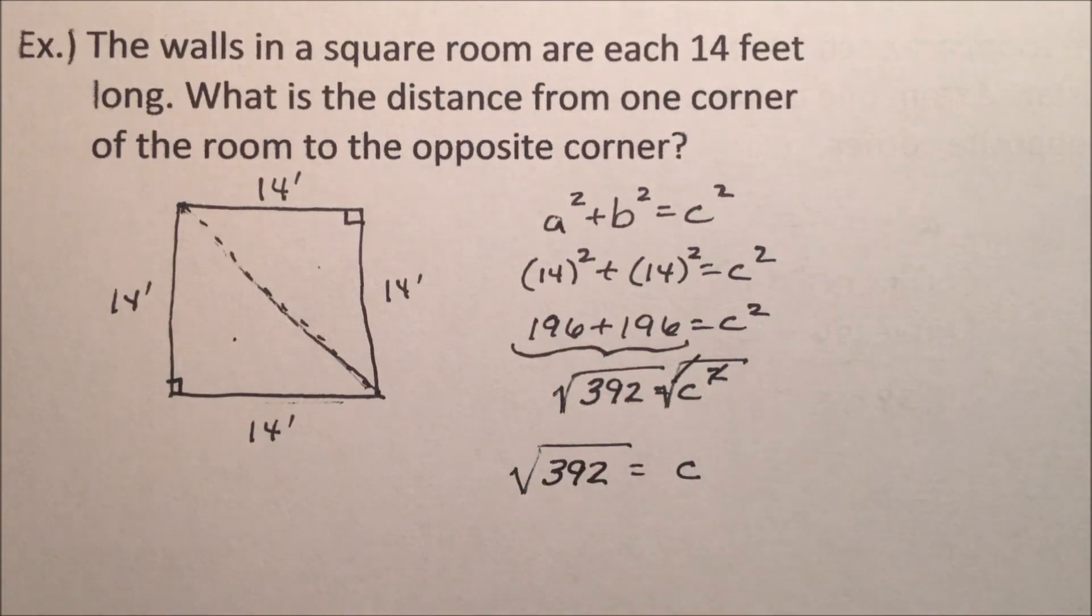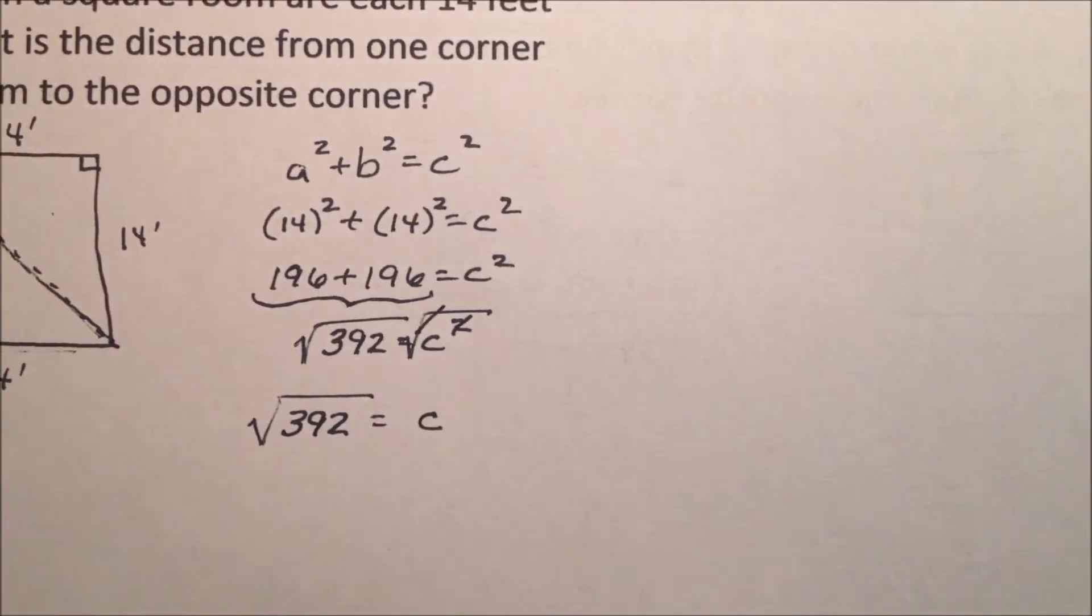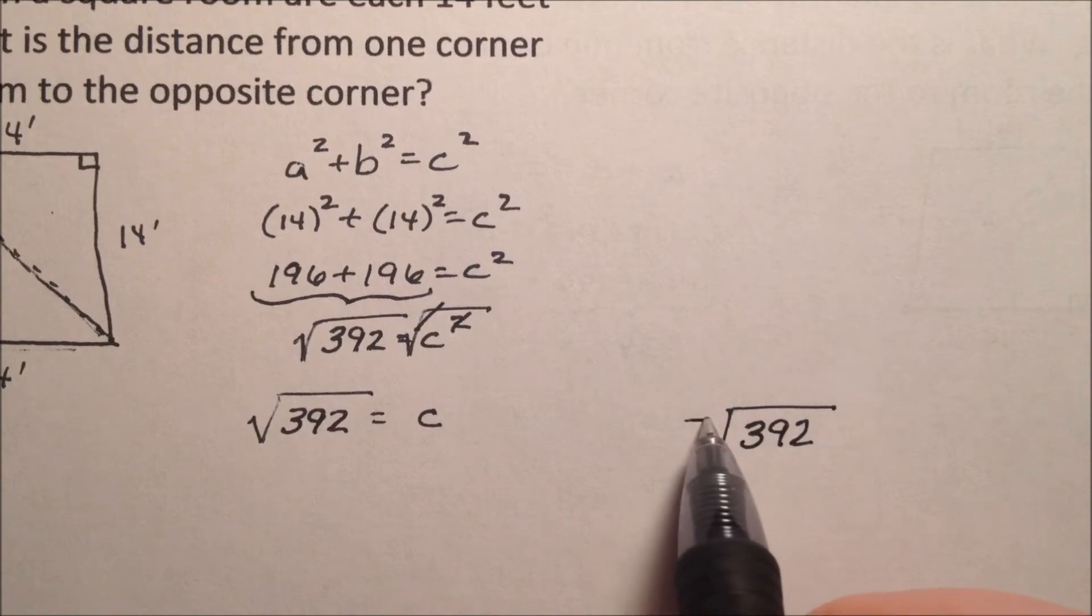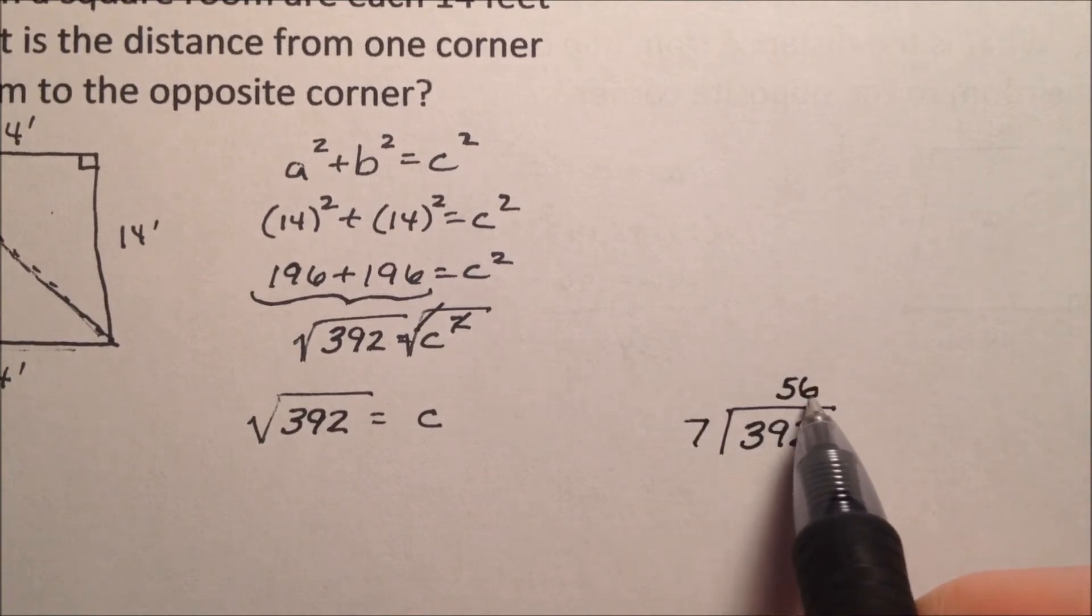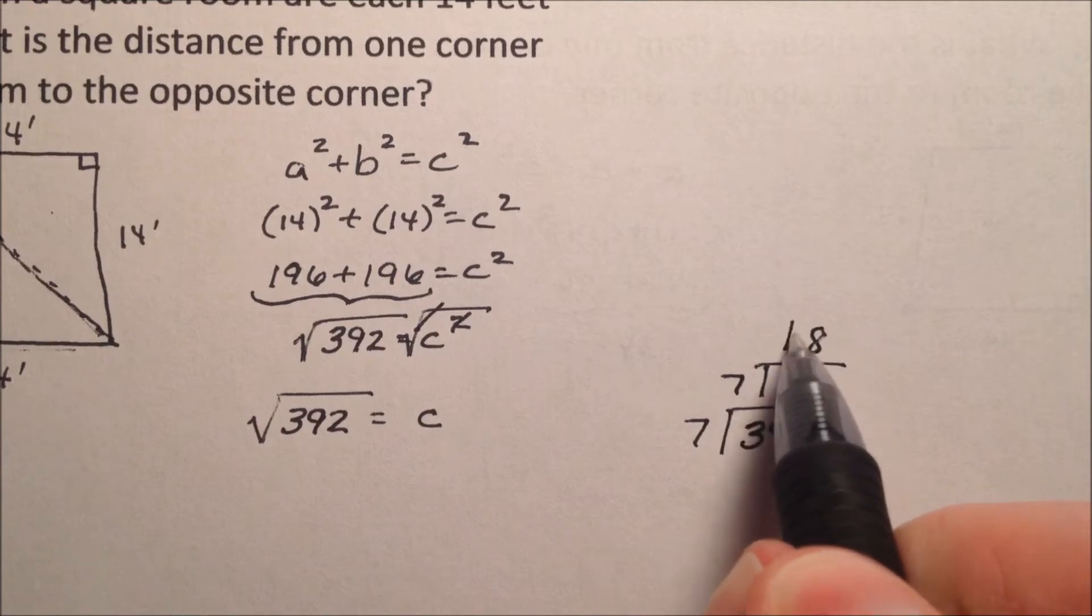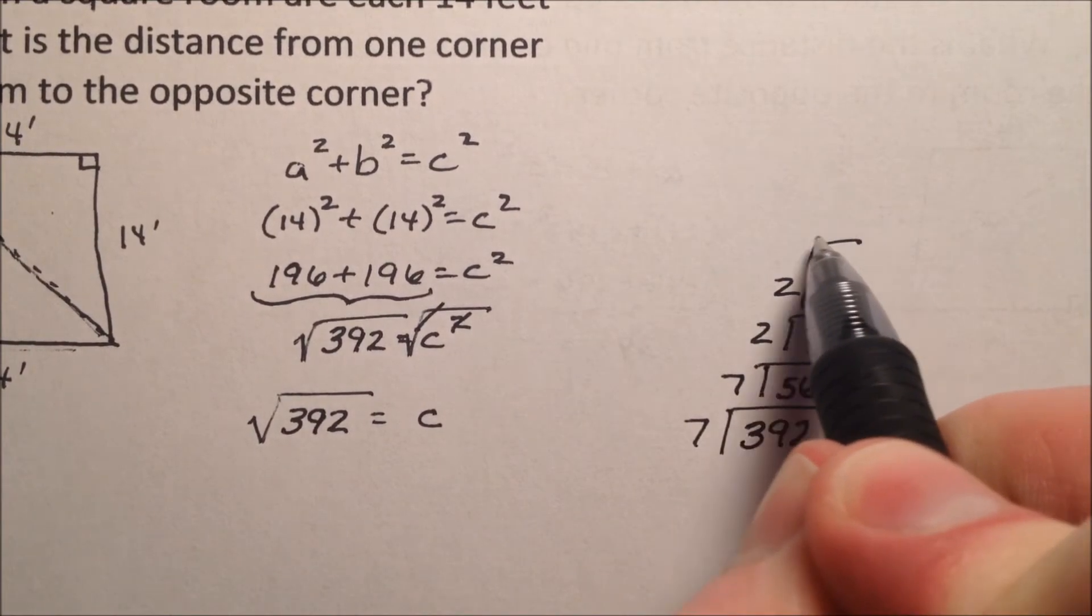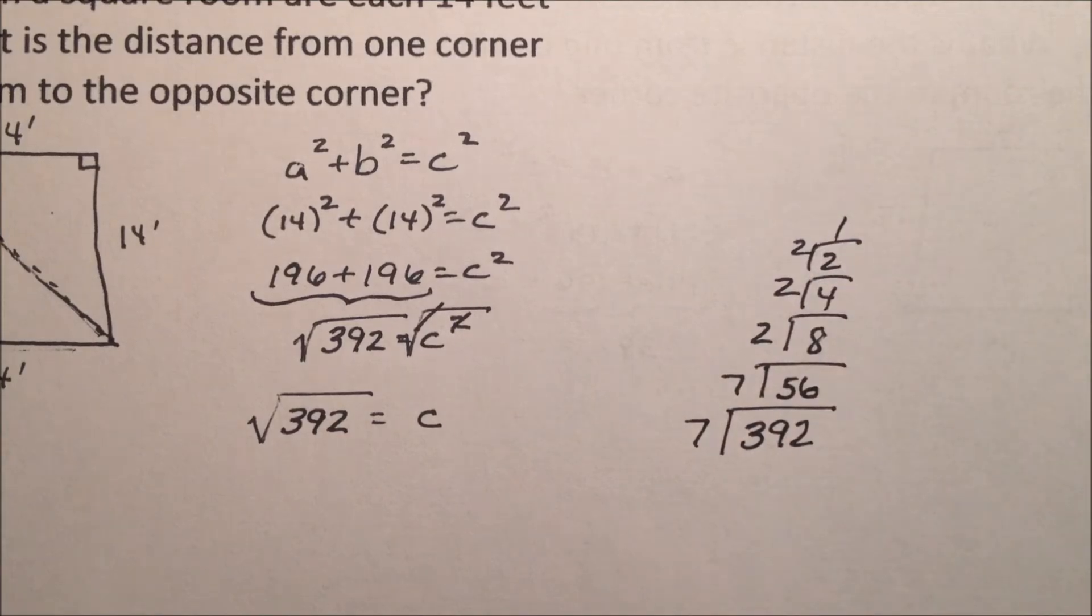Well, 392 is not a perfect square. So we're going to have to use our prime factorization and simplify this radical. So if we reduce it by seven first, looks like I'll get 56. 7 again makes an 8. The 2 makes 4. 2 makes 2. And a final 2 will make 1. So this square root of 392